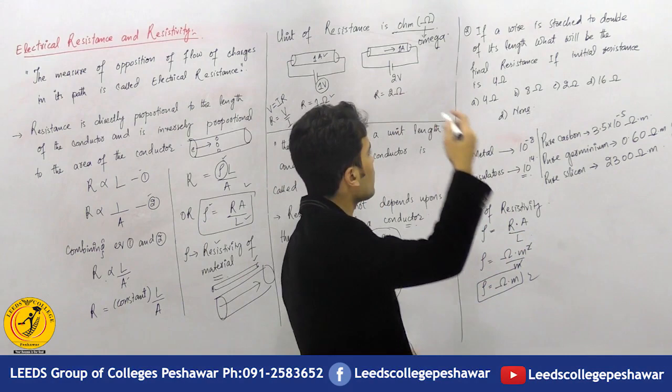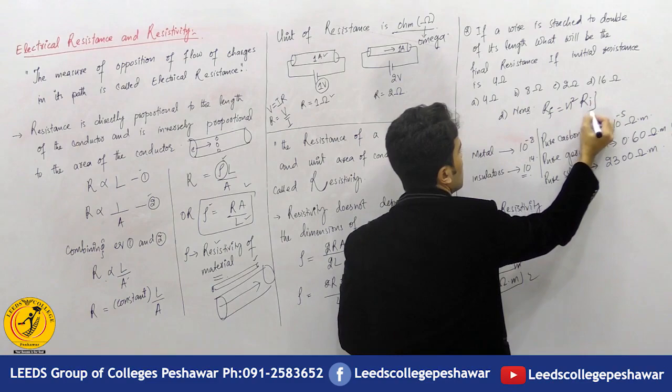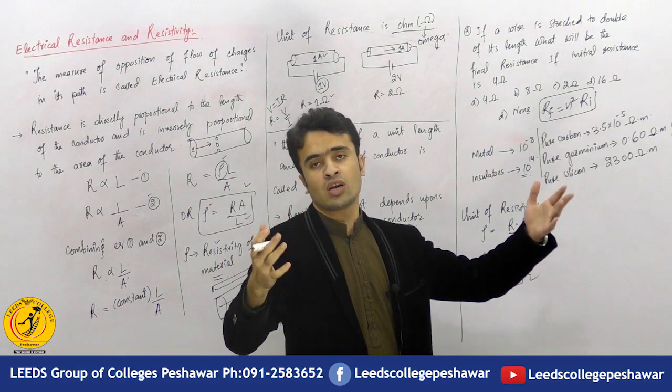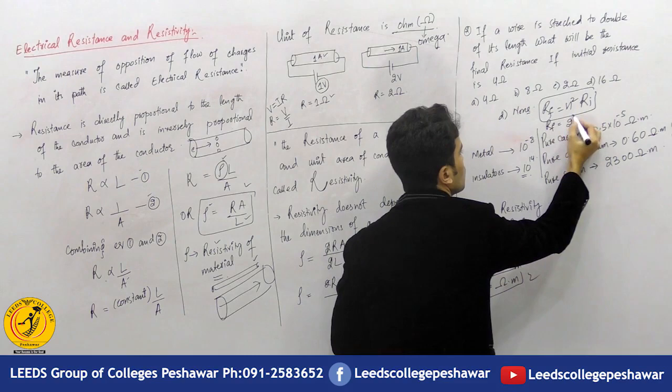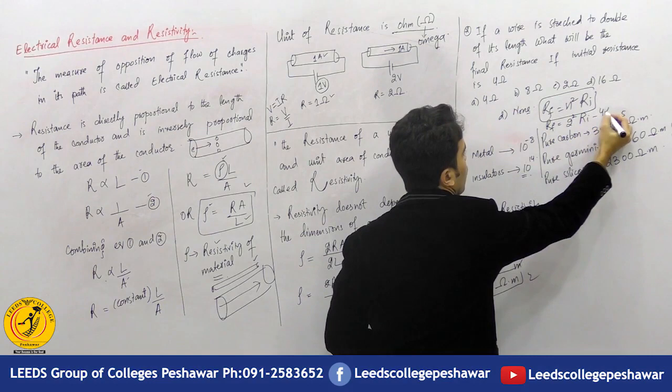There is a shortcut formula for this: the final resistance equals n² multiplied by the initial resistance, where n is the factor by which the length is changed. For example, if the length is doubled (n = 2), then the final resistance equals 2² × initial resistance = 4 × 4 = 16.